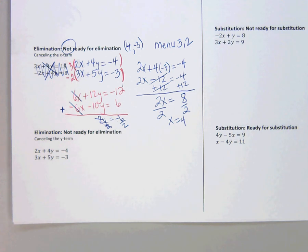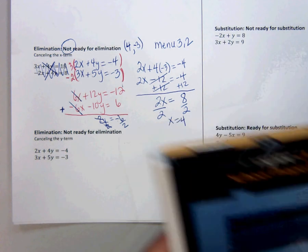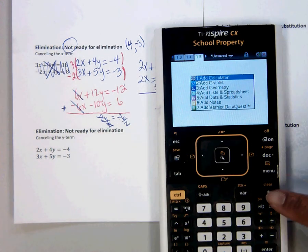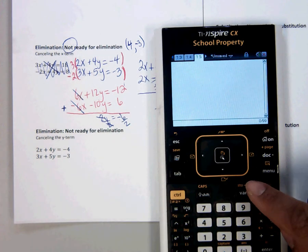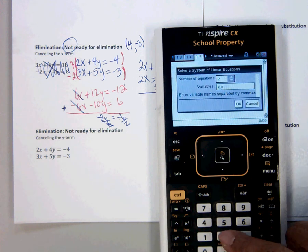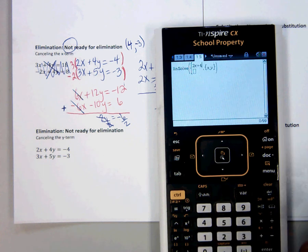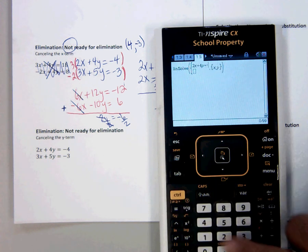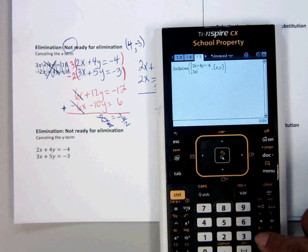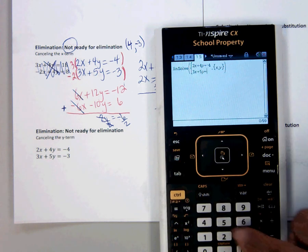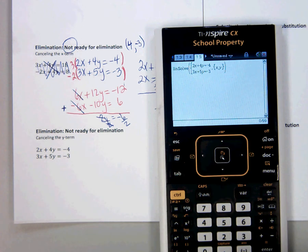So, now I'm going to use the calculator and use the menu 3-2 to check my work. So, I'm going to add a calculator and we do menu 3-2. And we type in 2x plus 4y equals negative 4. 3x plus 5y equals negative 3.